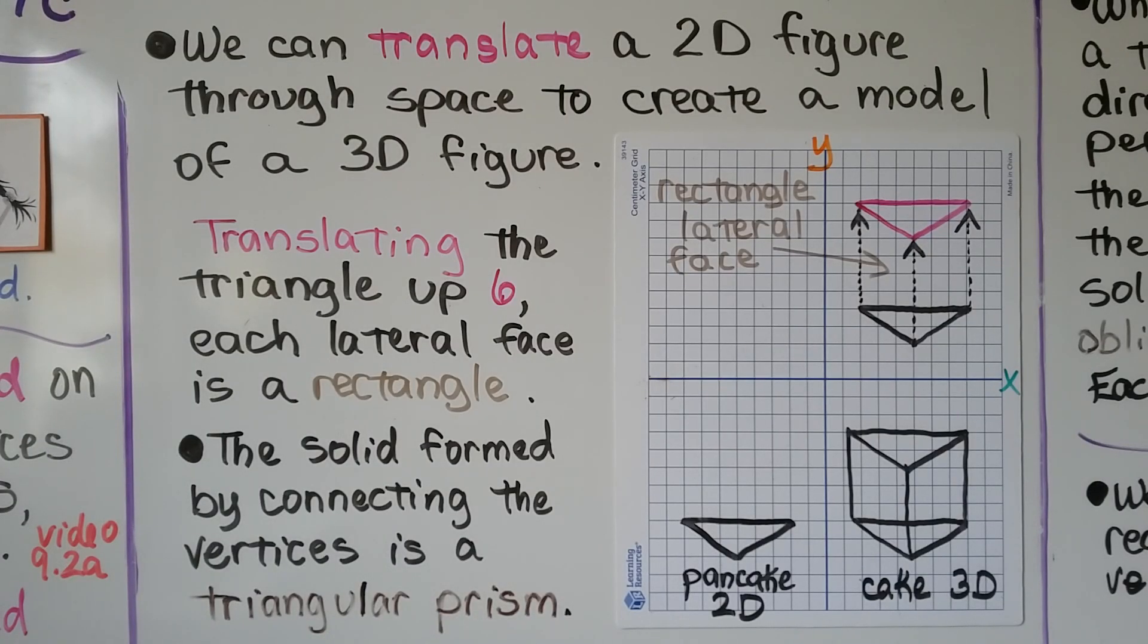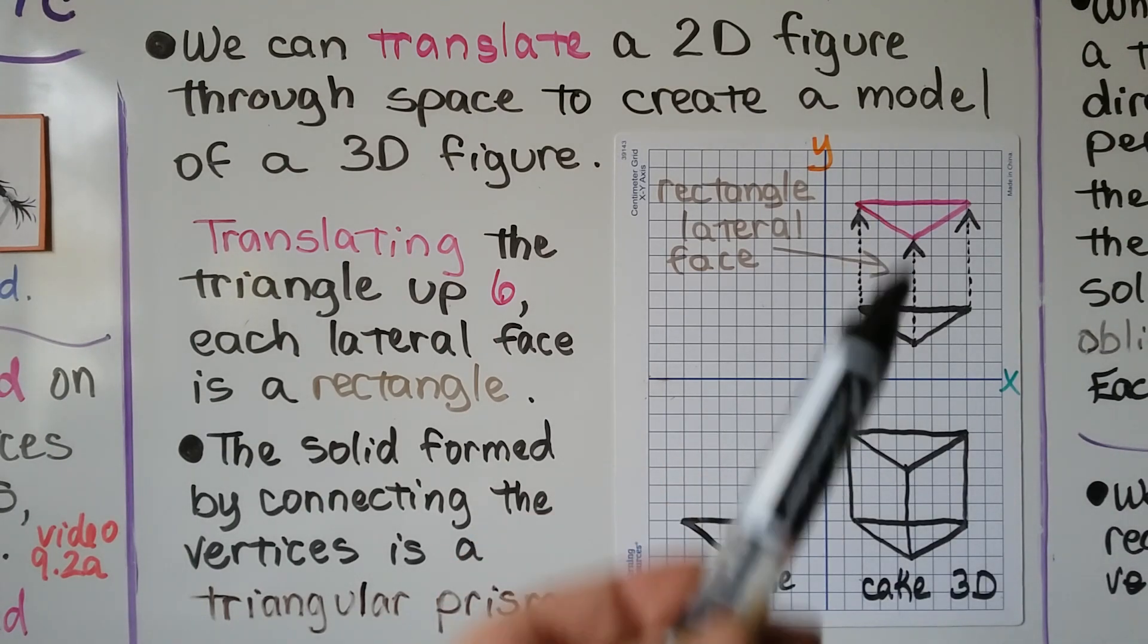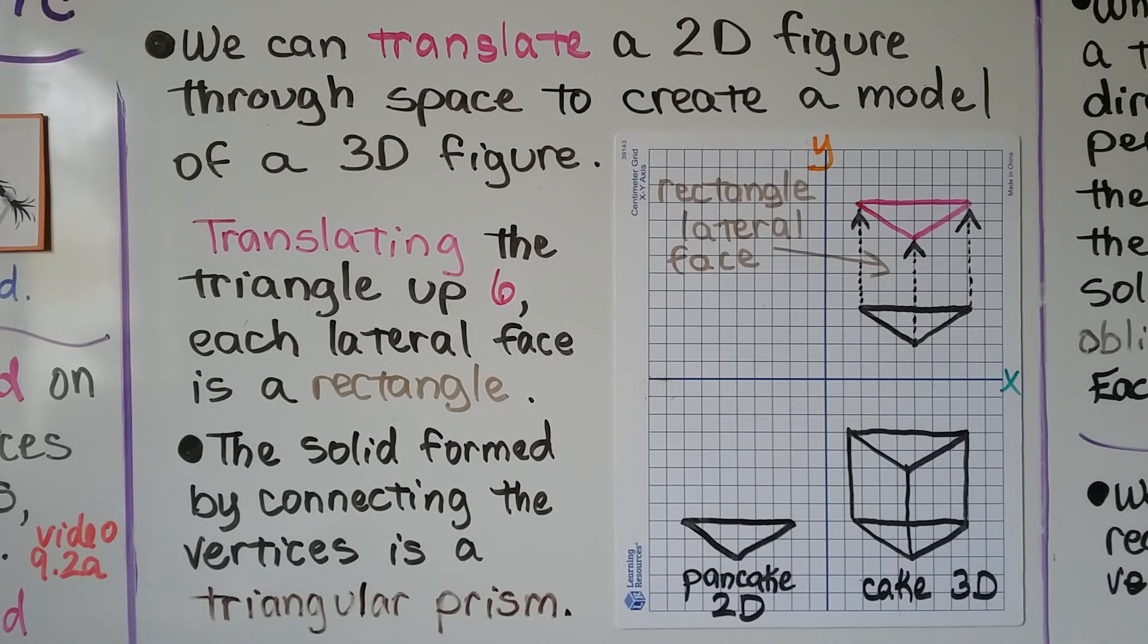We can translate a 2D figure through space to create a model of a 3D figure. Translating this triangle up 6, each lateral face is a rectangle, and the solid formed by connecting the vertices is a triangular prism. So we went from a 2D pancake of a triangle to a 3D cake of a triangular prism.